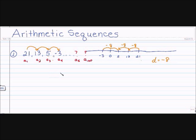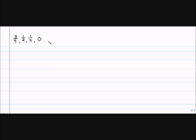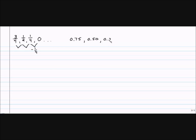Let's go ahead and find the next three terms of the next sequence. The first thing we need to do is find the difference — how do we get from one term to the other? We're at one fourth and we got to zero, so that's one fourth. Now, one half minus one fourth — let's work in decimals. Using a calculator: three fourths is 0.75, one half is 0.50, one fourth is 0.25, and then zero.